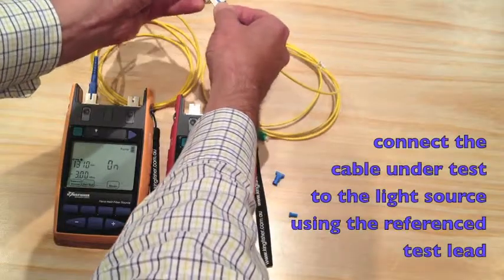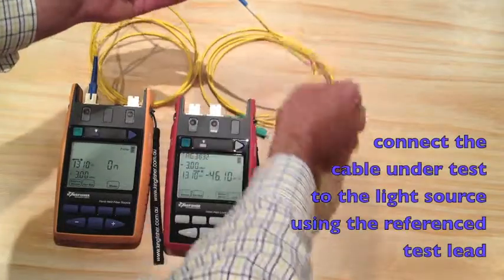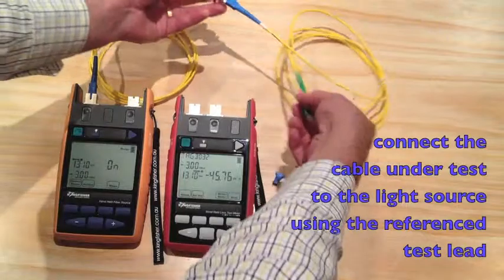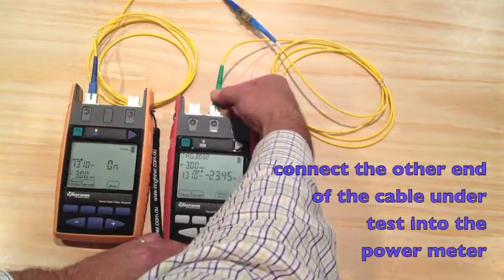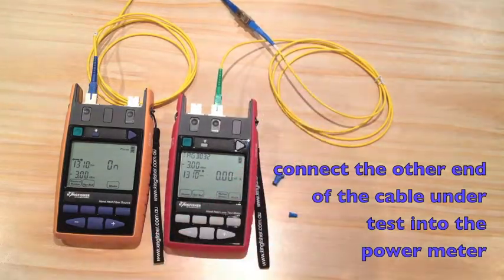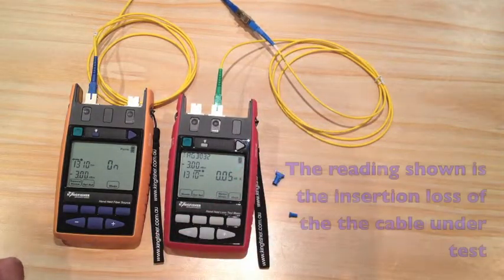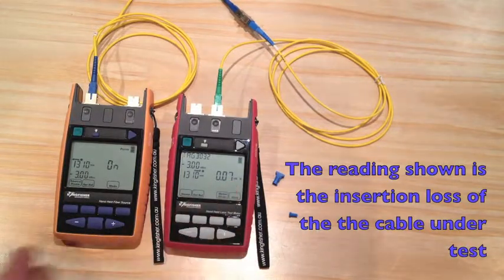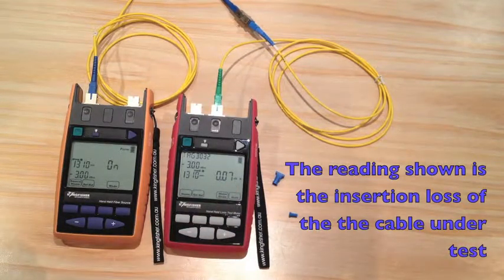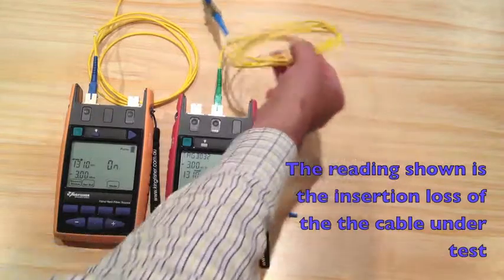We'll connect the patch lead to the test lead of the light source. Connect the other end of the cable under test into the power meter. And now the reading that's showing here is the relative loss introduced by the cable under test.